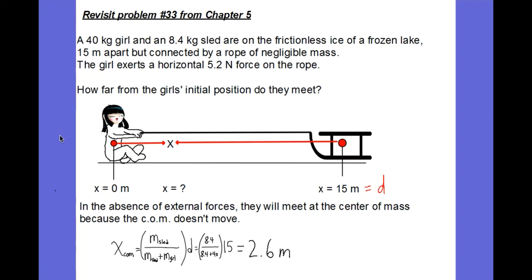Let's look at a problem that we did back in Chapter 5. A 40-kilogram girl and an 8.4-kilogram sled are on the frictionless ice of a frozen lake, 15 meters apart, but connected by a rope of negligible mass. The girl exerts a horizontal 5.2-Newton force on the rope. How far from the girl's initial position do they meet? The girl pulling on the rope and the rope pulling on the sled, those are all internal forces to the girl-rope-sled system.